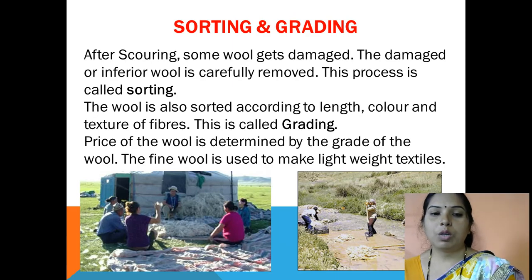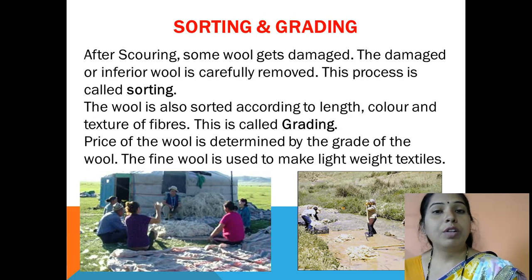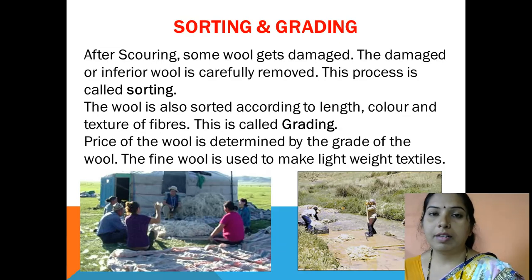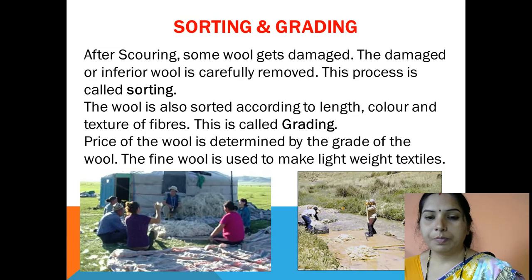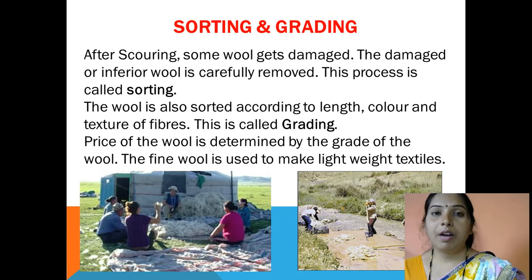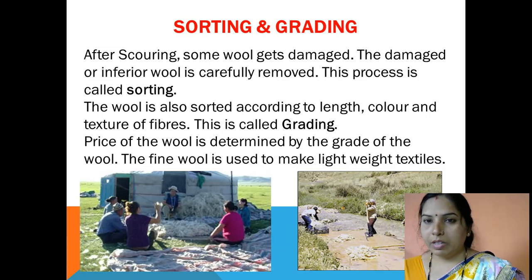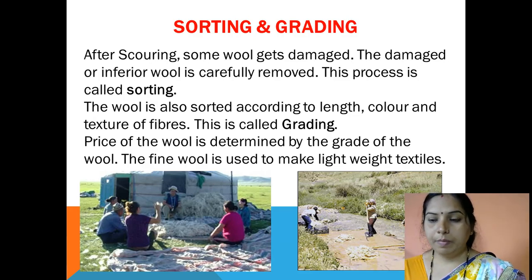The next step is sorting and grading. After scouring and drying, some wool gets damaged and is removed. The wool is also sorted according to length, color and texture — that process is called grading. After grading, the price of the wool is determined by its grade. Fine wool is used to make lightweight textiles.